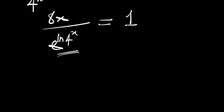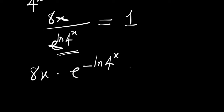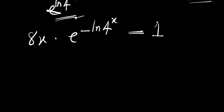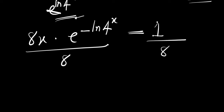Remember if you have 1 divided by a, this is the same thing as a raised to the power of negative 1. We have just applied this identity. The next thing we are going to do is divide each part of this equation by 8.